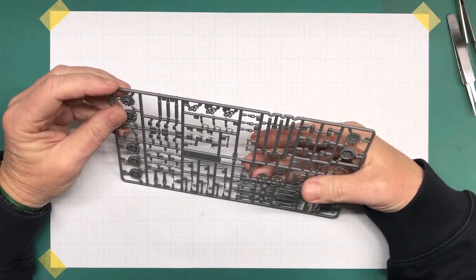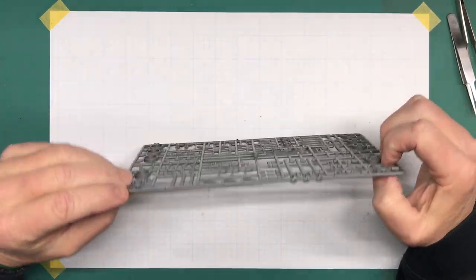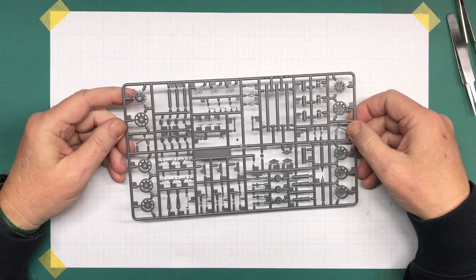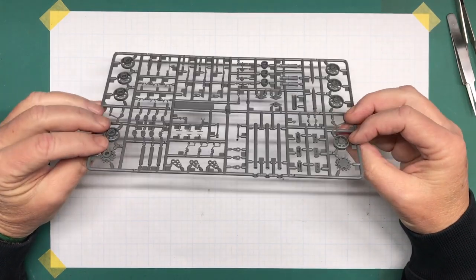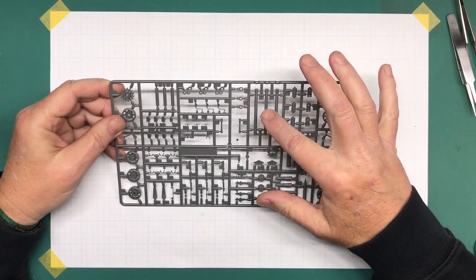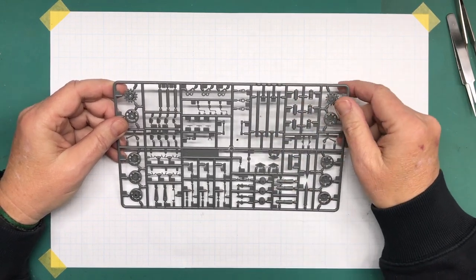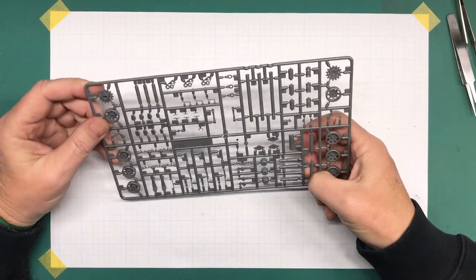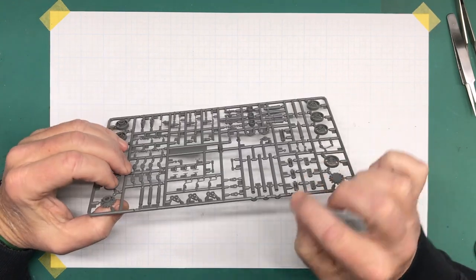Then we have two Sprue C, which is very common in armor kits. We've got some of the road wheels, drive sprocket, what I'm assuming is the idler, lots of little stuff here. And then we've got the, okay now that's nice, so these are the weapons, the recoilless rifles, anti-tank things. I'll have to look into that. I'm not real familiar with this vehicle in particular and Vietnam vehicles in general. I'll have to look that up.